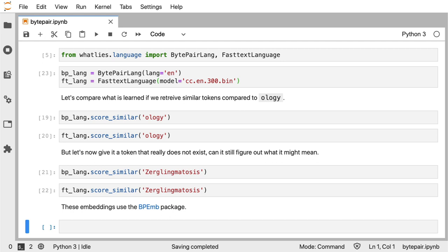Because byte pair embeddings tend to focus on specific word segments, they do end up learning slightly different patterns, and I figured it'd be nice to demo how what lies can help us understand this.